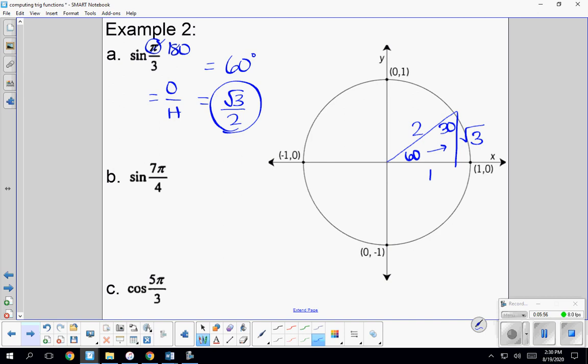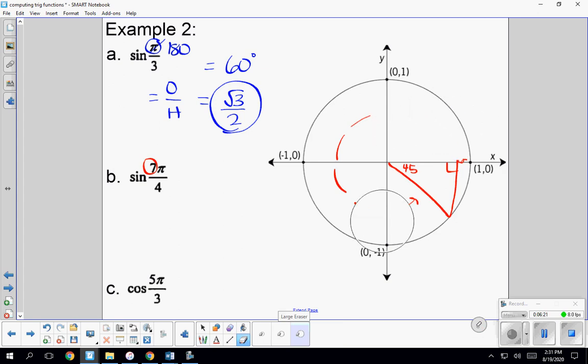And we'll do one more. We'll do the sine of seven pi over four. So again, pi over four is half of each quadrant. So we'll do that seven times, starting at zero here. So one, two, three, four, five, six, seven. So this is my 45, 45, 90, which means my side lengths are radical two over two. And my hypotenuse is one. This one's going to be negative because we're going down below the x-axis. And the sine, again, is opposite over hypotenuse. So the opposite of this reference angle is negative radical two over two.